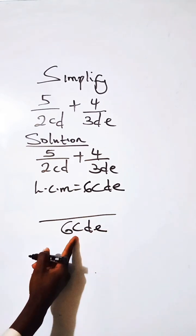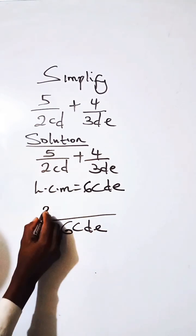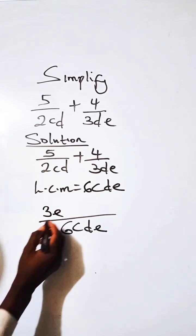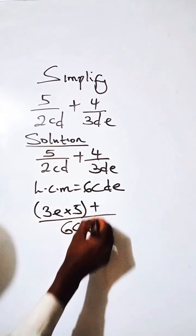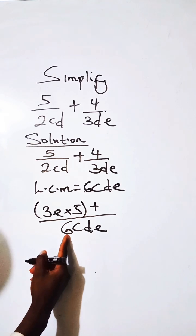When we take this, we divide it with this, we have this as 3E. So multiply it by 5, which is this. So we add up 6CDE.